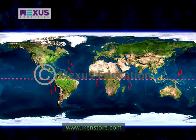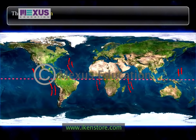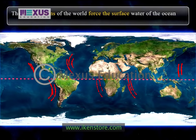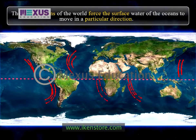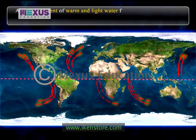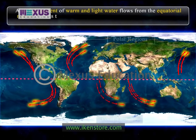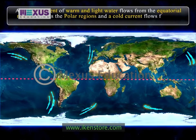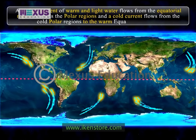Ocean currents are powered by the wind system of the world. The wind systems of the world push the surface water of the oceans to move in a particular direction. A surface current of warm and light water flows from the equatorial region towards the polar region, and a cold current flows from the cold polar regions to the warm equatorial region.